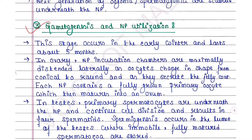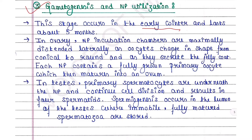Step 3 is gametogenesis and NP utilization. This stage occurs in early winter and lasts about five months. In the ovary, NP incubation chambers are maximally distended laterally as oocytes change in shape from conical to round and secrete the jelly coat. Each NP contains a fully grown primary oocyte which then matures into an ovum. In the testis, primary spermatocytes continue cell division underneath the NP, resulting in four spermatids. Spermiogenesis occurs in the lumen of the testis where immobile, fully matured spermatozoa are stored.